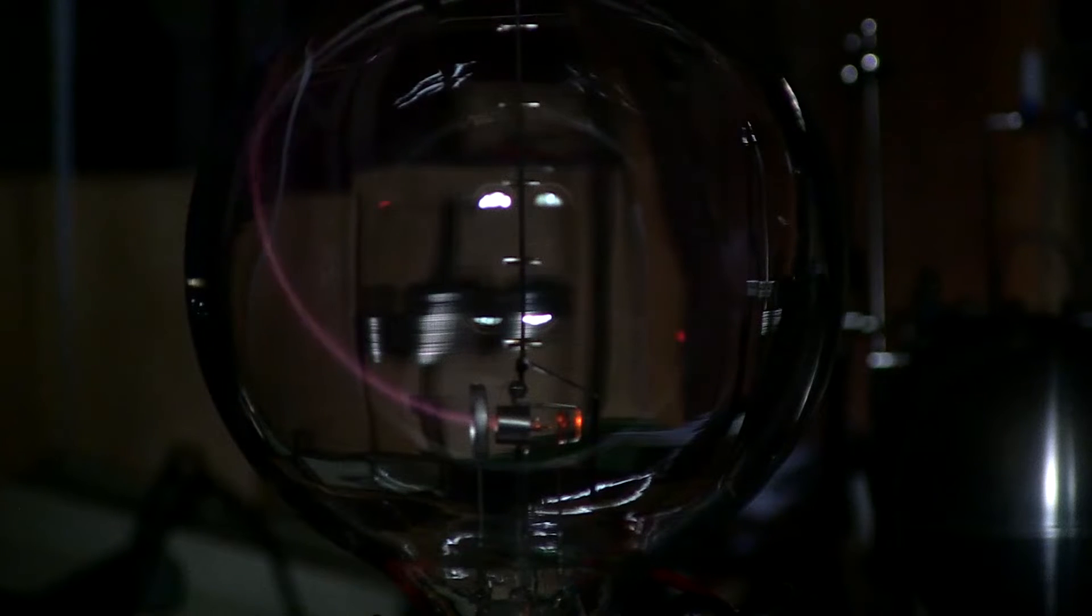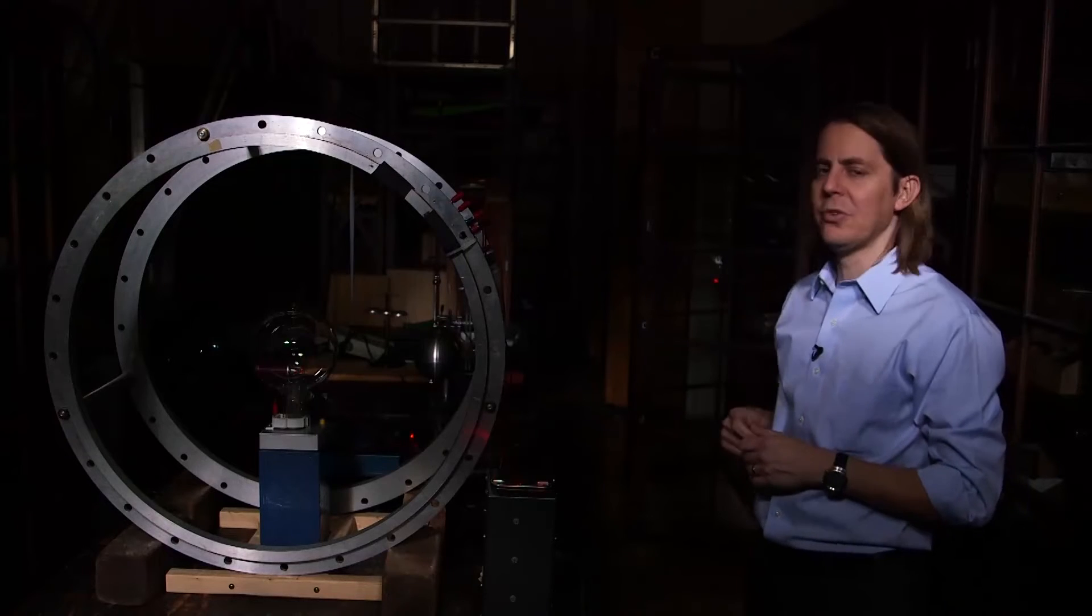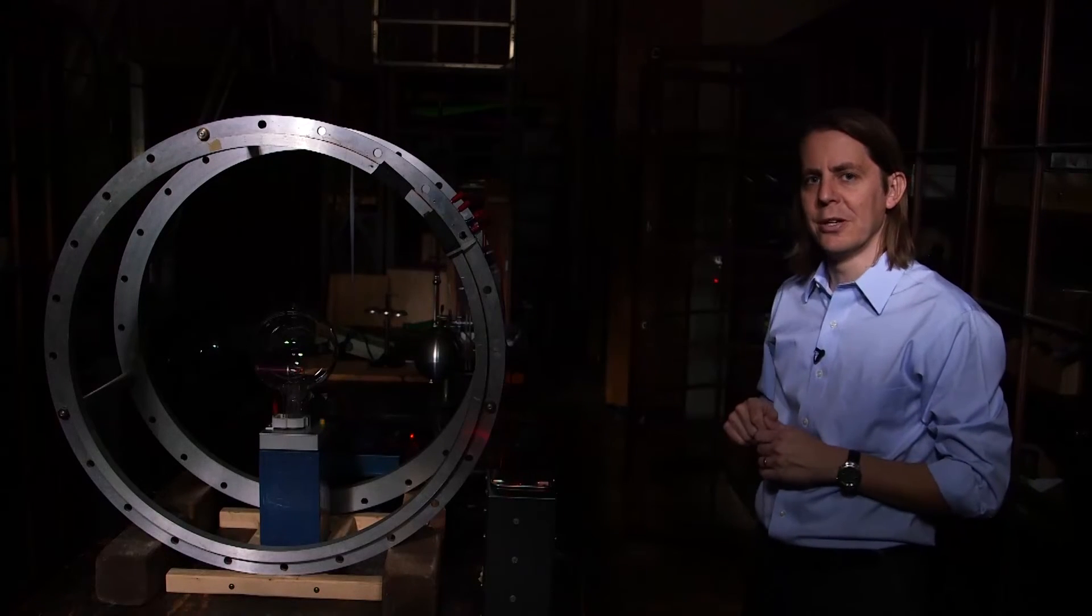And if I turn the magnetic field back down, back down to zero, straight again. So there's direct visualization of the circular motion of charge in the magnetic field.